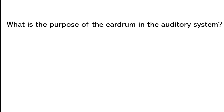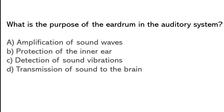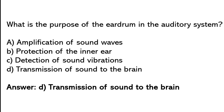What is the purpose of the eardrum in the auditory system? Amplification of sound waves, Protection of the inner ear, Detection of sound vibration, Transmission of sound to the brain. So the correct answer is option D: transmission of sound to the brain.